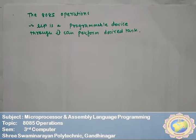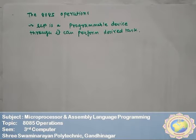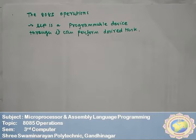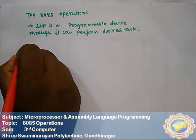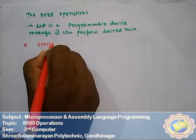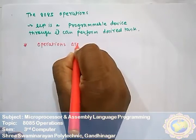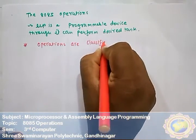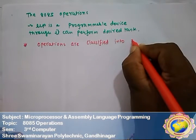The microprocessor can also respond to an external event like a reset signal or interrupt. These functions are classified into three categories.